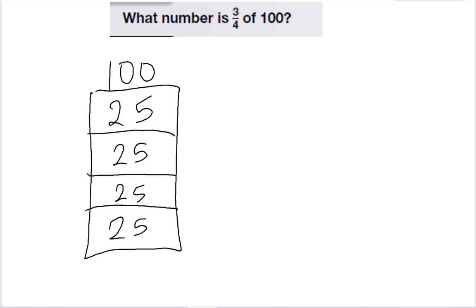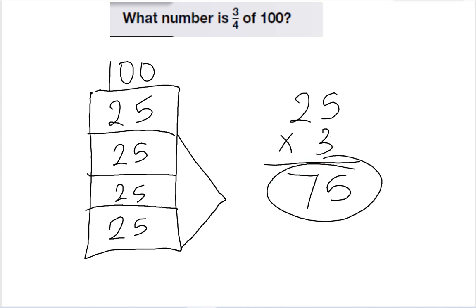And then I need to know three-fourths, or three of these. Well, three times twenty-five equals seventy-five. So seventy-five is three-fourths of one hundred.